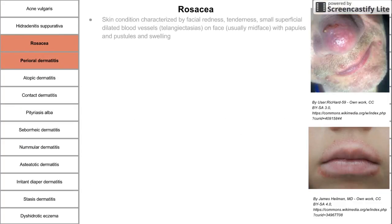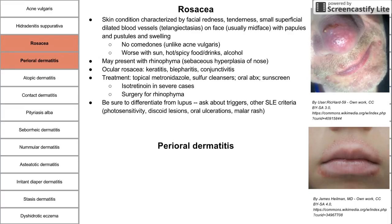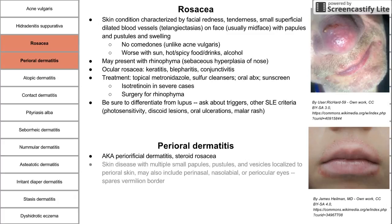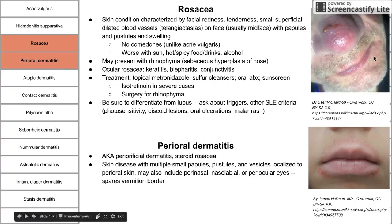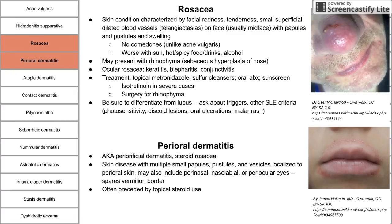It's also worth comparing rosacea to perioral dermatitis. Perioral dermatitis is a skin disease with multiple small papules, pustules, and vesicles localized to the perioral skin — this may also include perinasal, nasolabial, or periocular areas. Importantly, perioral dermatitis spares the vermilion border. It is usually preceded by topical steroid use. Treatments include tetracyclines and macrolides. These are distinct diseases, though both occur in the middle of the face.